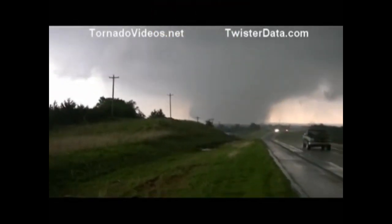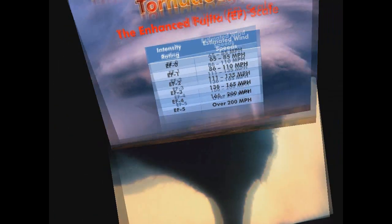We can also break down tornado intensity into three basic classes. Weak tornadoes — those of EF0 to EF1 in strength — account for almost 90% of all tornadoes and the least amount of deaths. They're short-lived, with winds generally under 110 miles per hour.